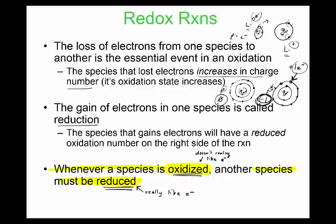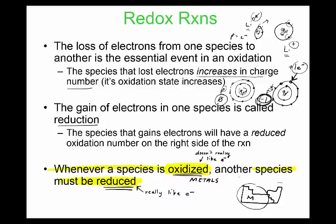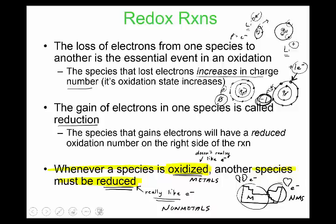Things that get oxidized are typically metals, found on the left side of the periodic table — they don't like electrons. Non-metals, on the other side, like electrons and tend to get reduced. These two types coincide to make stable ionic bonds.